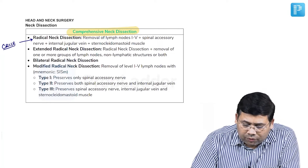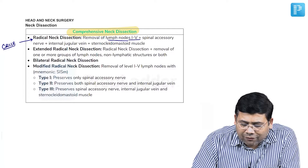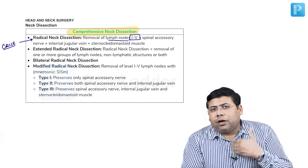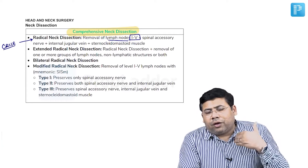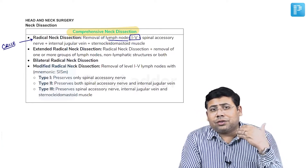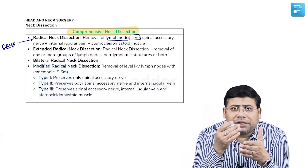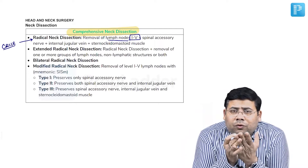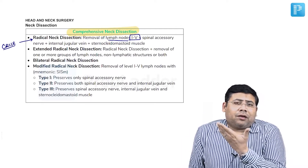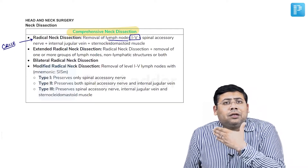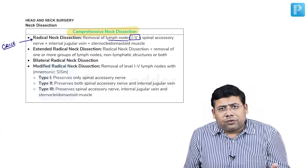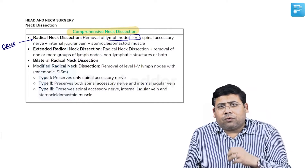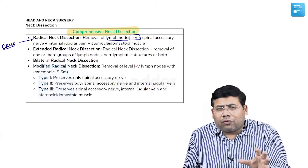What is neck dissection all about? It involves removal of lymph node levels 1 to 5. In order to remove levels 1, 2, 3, 4, and 5 — upper jugular, mid jugular, lower jugular, and posterior triangle nodes — you have to resect the sternomastoid. So removal of the sternomastoid and internal jugular vein is mandatory in radical neck dissection.